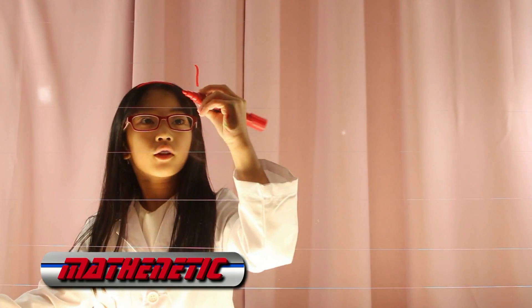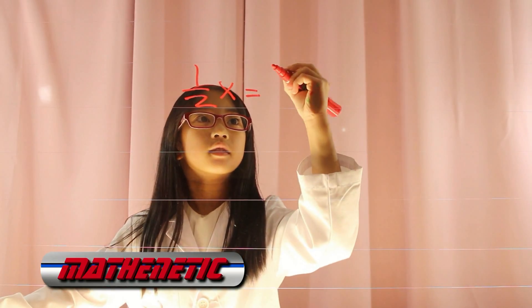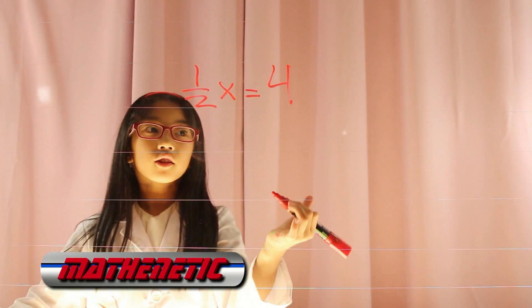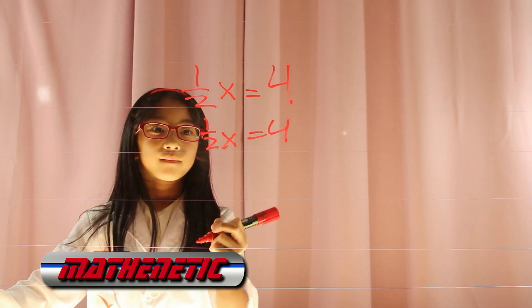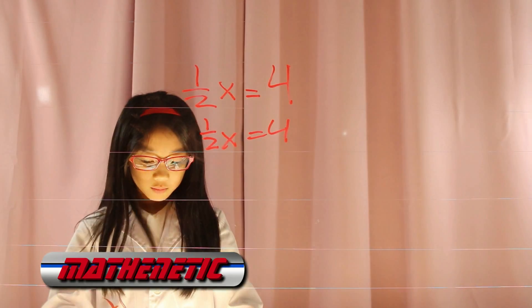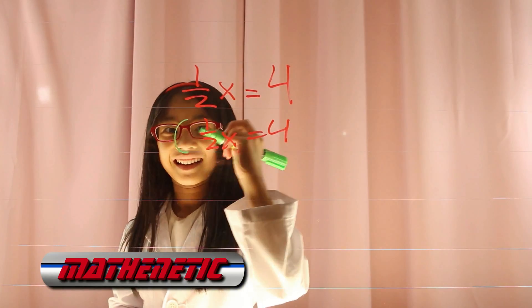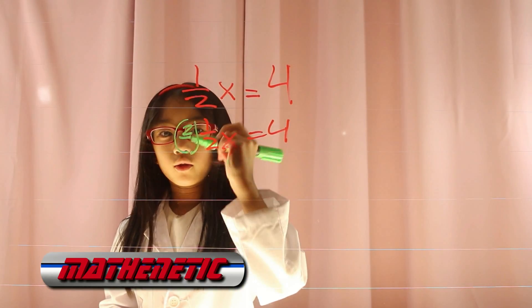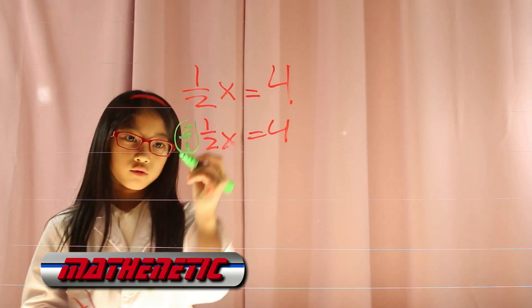Let's review algebra by multiplication. Say you have the equation ½x equals 4. Copy the equation down again. You need to multiply ½ by 2, or 2 over 1.